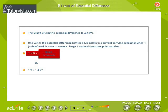That is, one volt is equal to one joule by one coulomb. Or, 1V equals 1 J C raised to the power of minus 1.